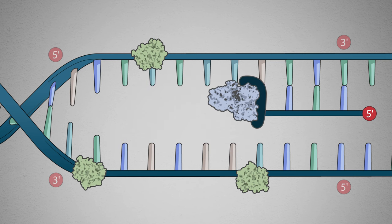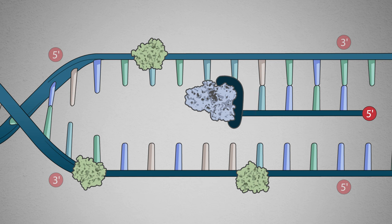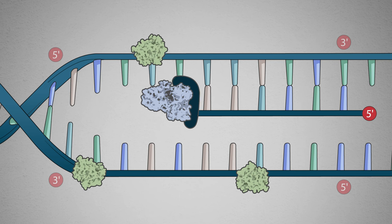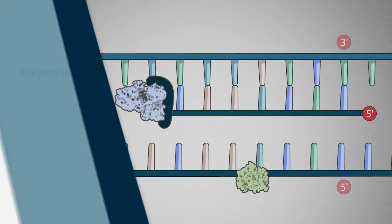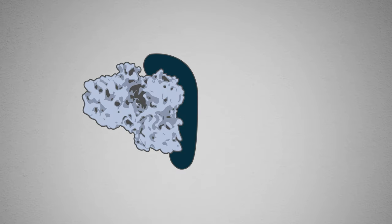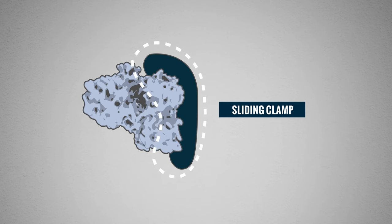The DNA polymerase starts at the 3' end of the RNA primer and, using the original DNA strand as a guide, begins to synthesize a new complementary DNA strand. Please note that DNA polymerase III can only synthesize DNA from the 5' to the 3' direction. The sliding clamp helps hold DNA polymerase III onto the DNA as it moves down the strand.